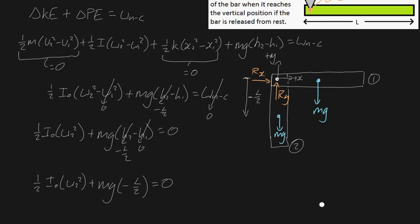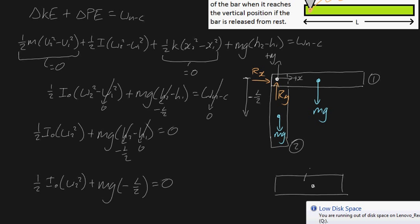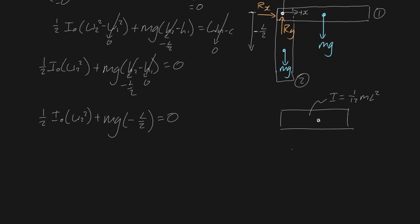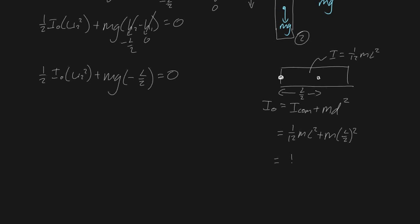Plugging in I_O = mL²/3, we get: one-half times (mL²/3) times ω2² = mgL/2. The halves cancel, we bring the 3 up: mL²ω2² = 3mgL. The L's and m's cancel, leaving ω2² = 3g/L, meaning ω2 = √(3g/L).